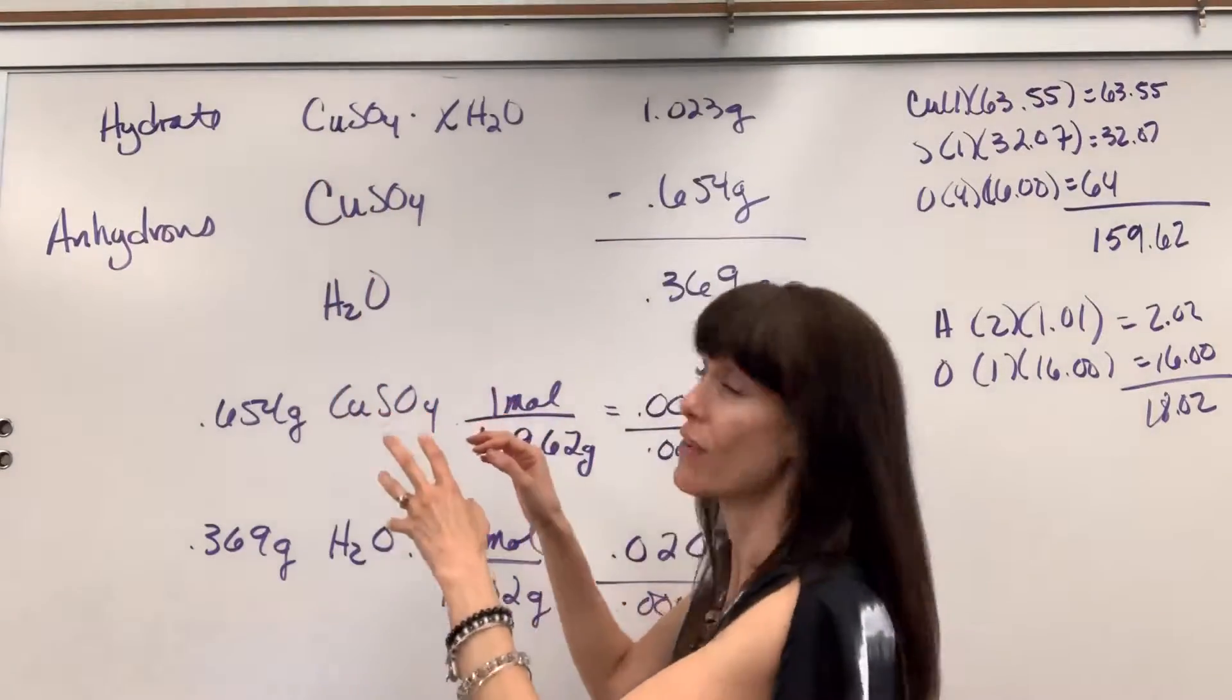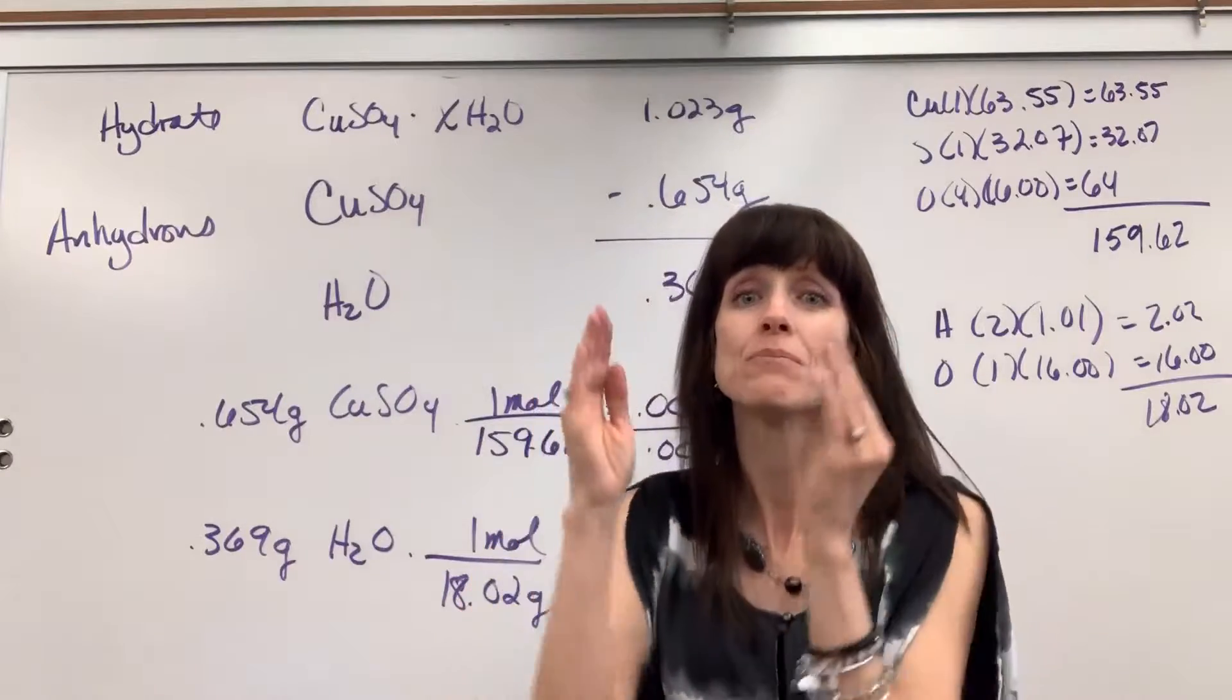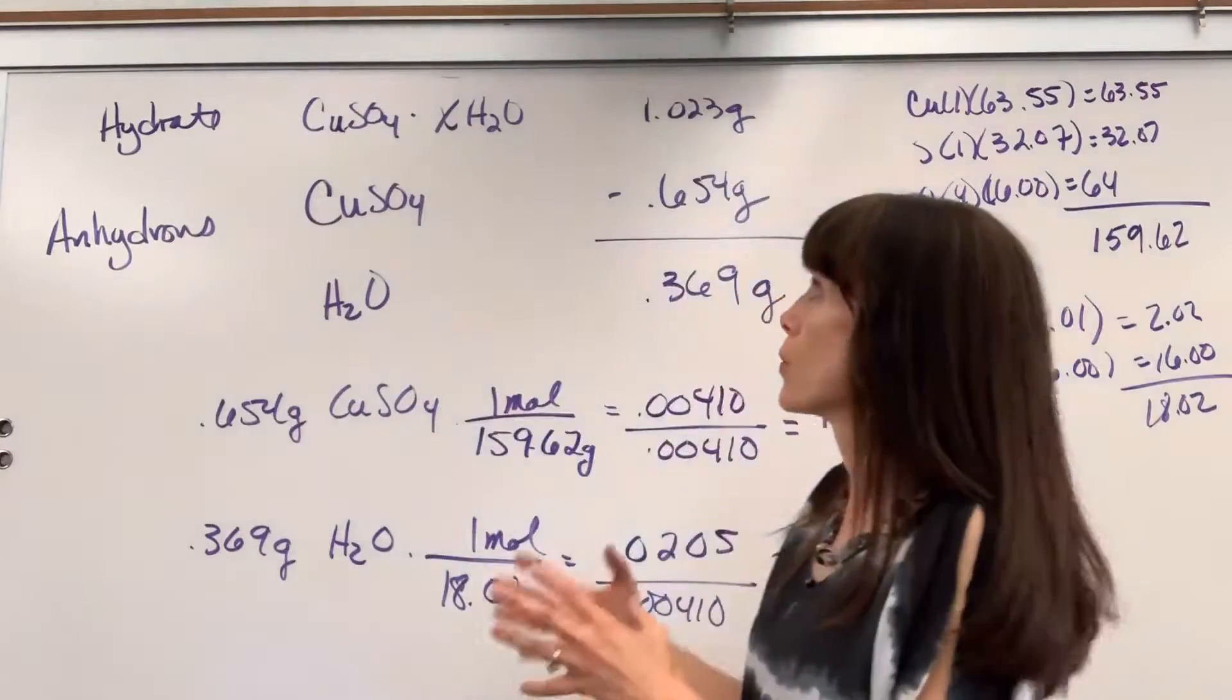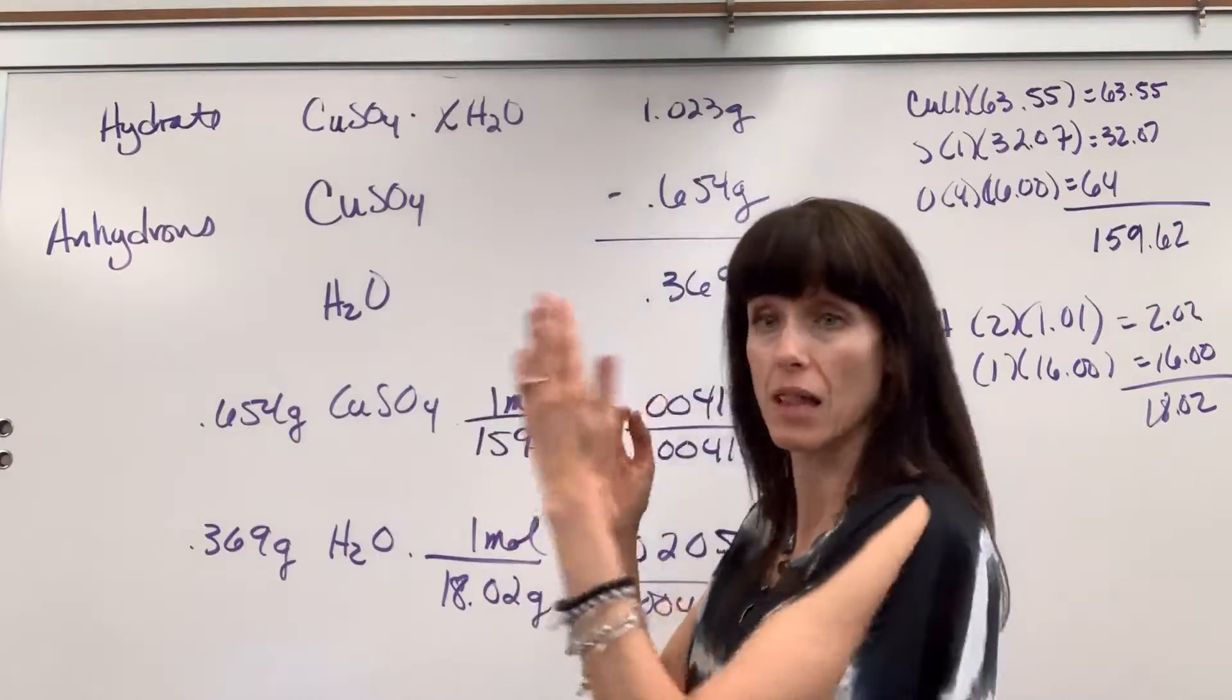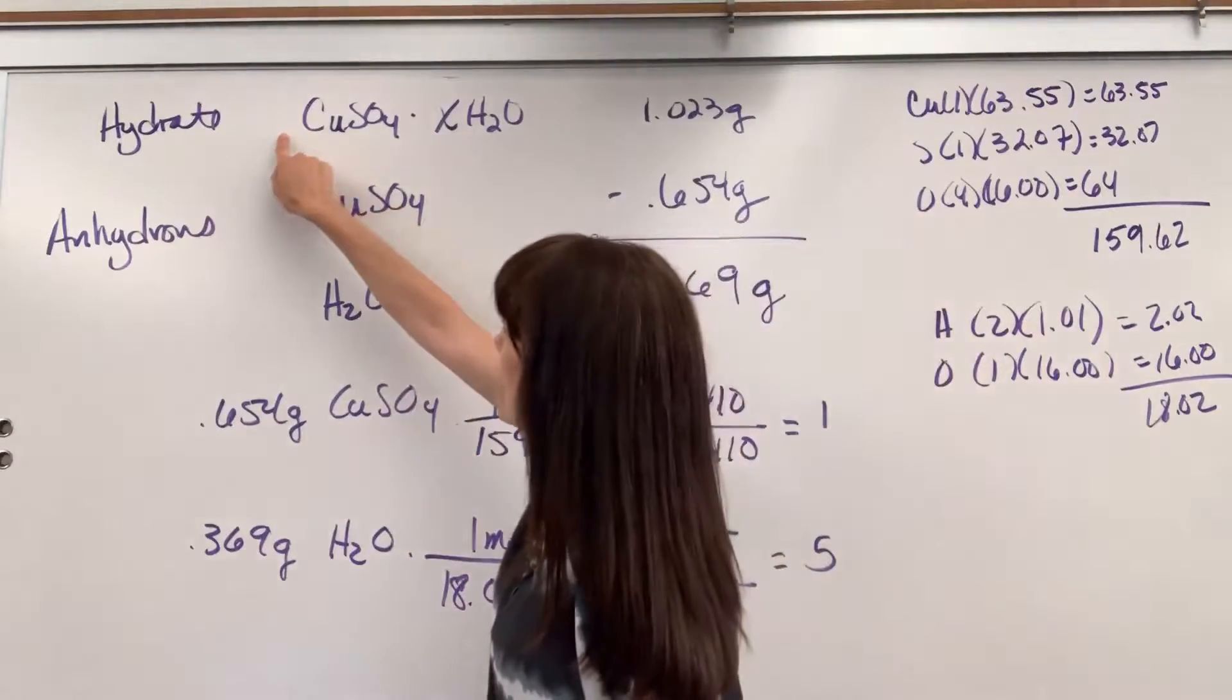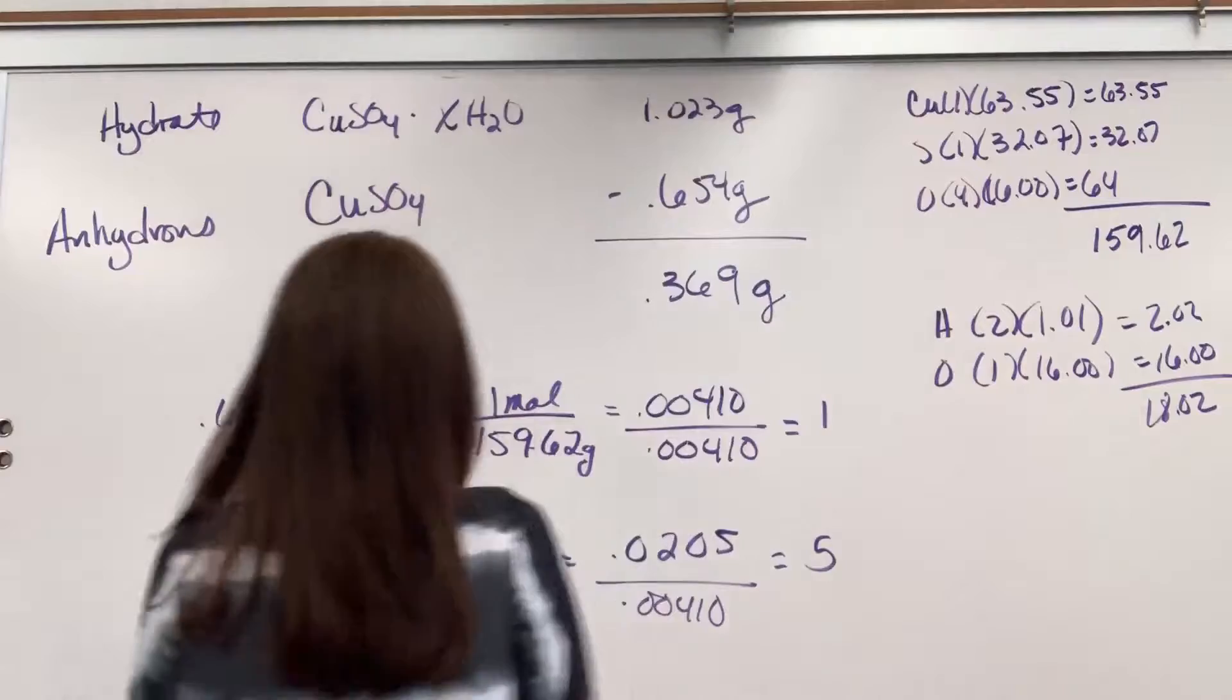One mole of copper 2 sulfate traps a certain number of moles of water. That's a molar ratio, a one to something ratio. So in empirical formula we do the molar ratio of elements in a compound. Now we're going to do an empirical formula, the same process, for the molar ratio of compounds.